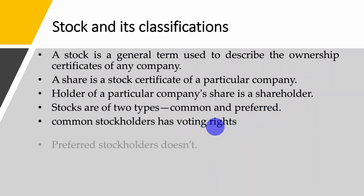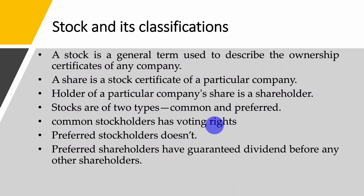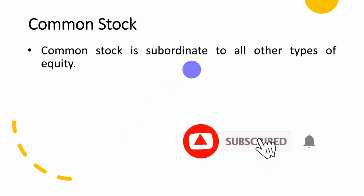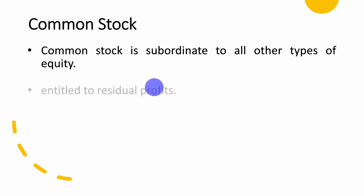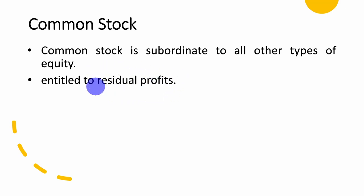A common stockholder has voting rights while the preferred stockholder does not have voting rights. When the company makes profit, preferred stockholders' dividends are guaranteed before any other shareholder. A common shareholder is subordinate to all other types of equity, and they are entitled to residual profit — meaning profit that remains after the dividends of preferred stockholders are paid.